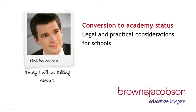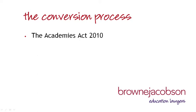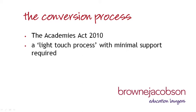The conversion process is largely a legal one. The Academies Act 2010 has streamlined the process of becoming an academy. It is now a light touch process with minimal support required. This is in great contrast to the lengthy process that the first wave of academies had to follow prior to the coalition government introducing the Academies Act 2010. Under this new streamlined process, there are four key stages. This streamlined approach is designed so that all issues that could delay a conversion being approved are checked before a school goes too far down the process.